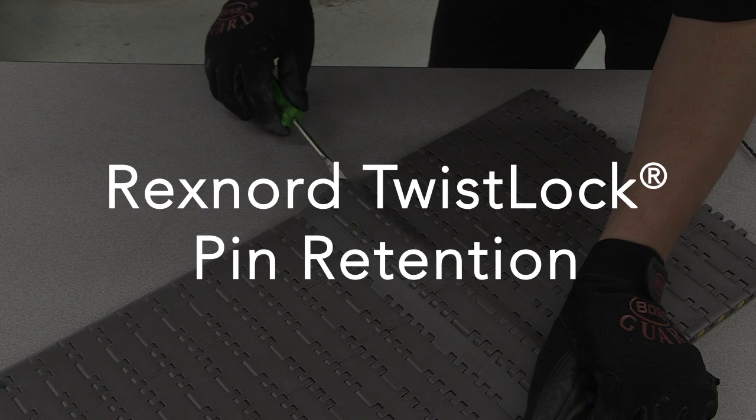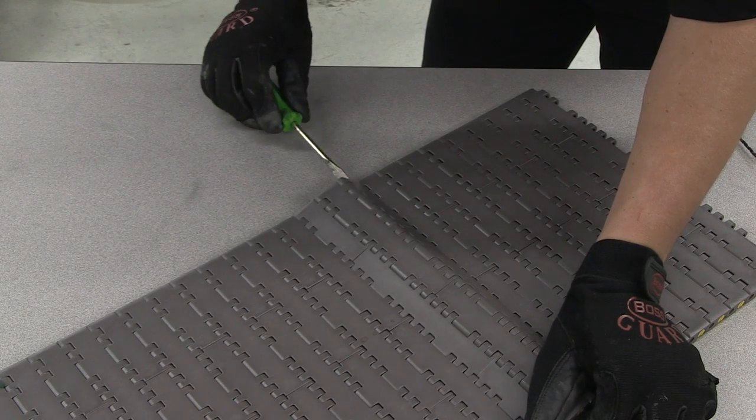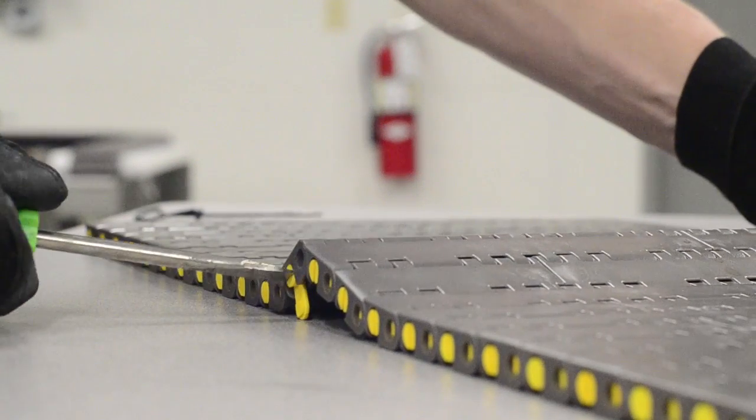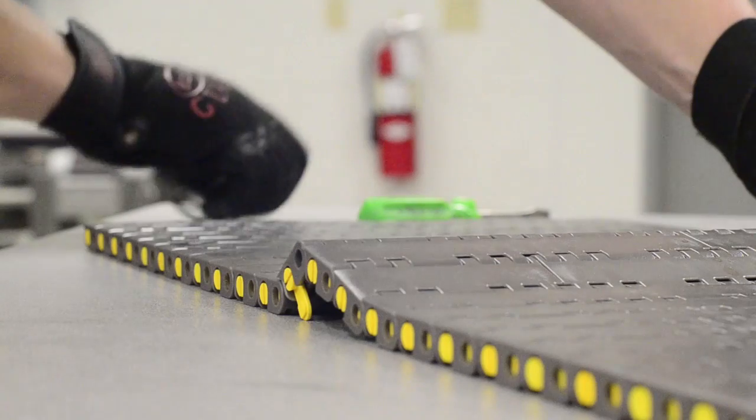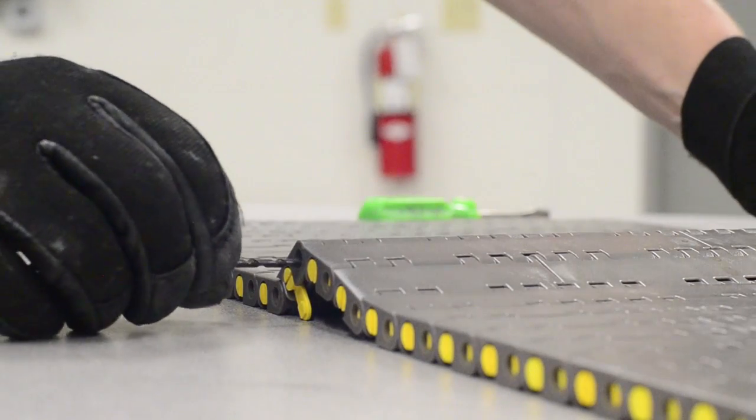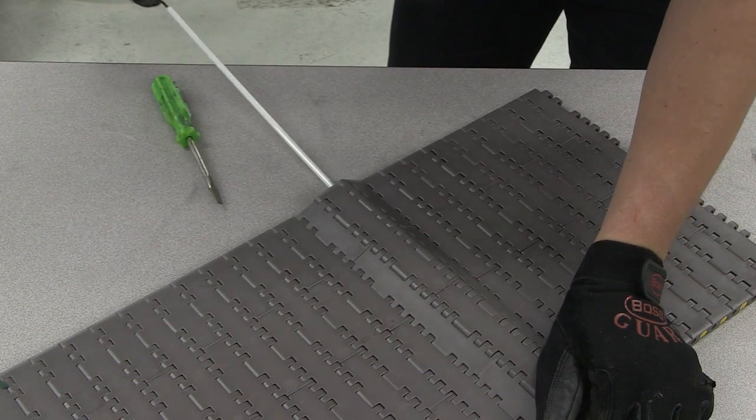To disassemble mat top chain utilizing Rexnord's patented twist lock pin retention system, simply use a flathead screwdriver and rotate the twist lock plug 90 degrees. Use the pin puller tool to extract the pin from the chain.